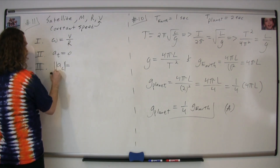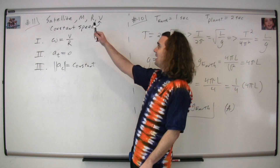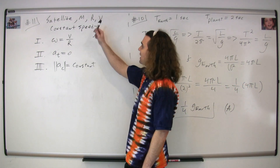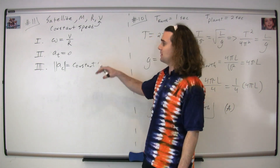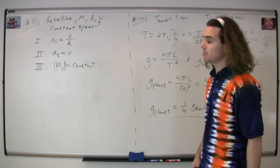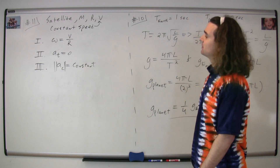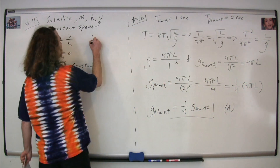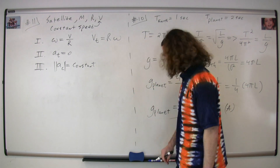Question number 11: we have a satellite with a mass m moving at an orbital radius of r at a constant speed v. We have three different statements, and the question is which are true. Statement i says the angular velocity is equal to v divided by r — well, the tangential velocity of any object is equal to the radius times the angular velocity, so that one is correct.